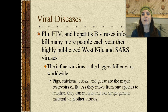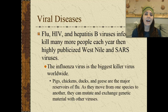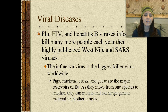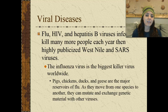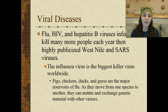Some of the most common viral diseases are the flu, HIV, and hepatitis B. These kill more people each year than the highly publicized West Nile virus and SARS. The influenza virus is the biggest killer virus worldwide and can be transmitted in many ways — it can transmit from one species to another, including pigs, chickens, ducks, and geese, which are the major reservoirs of the flu. Influenza viruses mutate and exchange genetic material with other viruses.